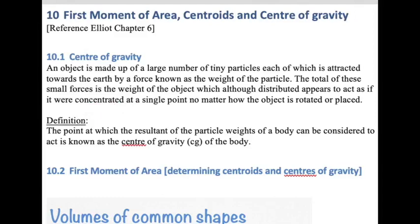Now that point would not change, no matter how you rotate the object. If you hold it upside down on its edge, whichever way around you rotate it, this imaginary point, which we're going to be calling the center of gravity, does not change position. So let's look at a formal definition. The point at which the resultant of the particle weights of a body can be considered to act is known as the center of gravity or CG of the body.